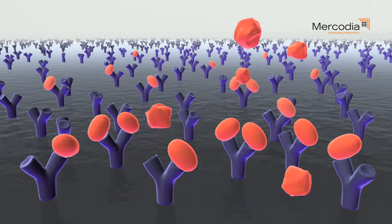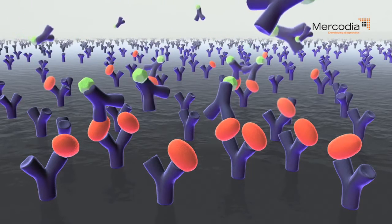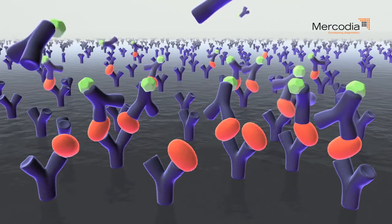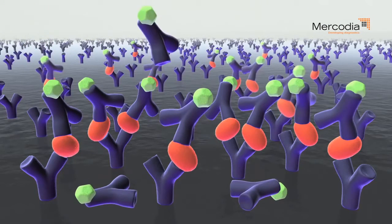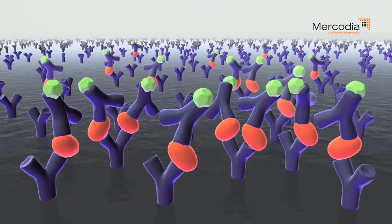Unbound compounds are removed by a washing procedure. The enzyme-linked detection antibody is added to the well. The detection antibody binds to a second epitope on the antigen. Unbound antibodies are removed by a washing procedure to avoid background signal produced by interference.